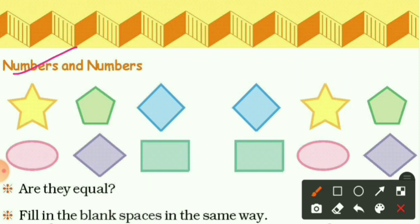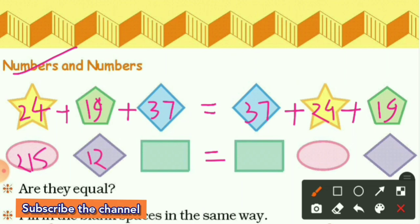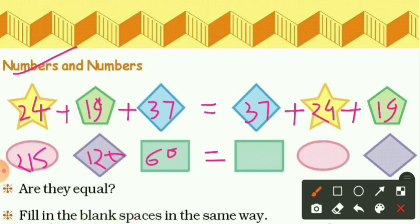Come to the first topic: Numbers and Numbers. Here we have some shapes — a star, pentagon, and square. In the star we have the number 24, in the pentagon we have 19, and in the square we have 37. On the bottom side we have 215 in an oval, 120 in a square, and 600 in a rectangle. Plus symbols are between these shapes.